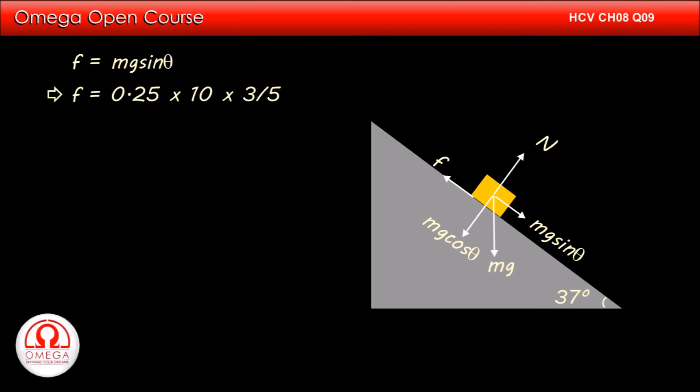Putting the values, we get f is equal to 0.25 into 10 into 3 by 5, or f is equal to 1.5 newtons.